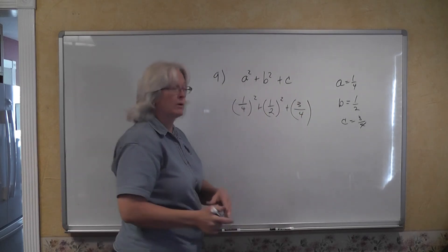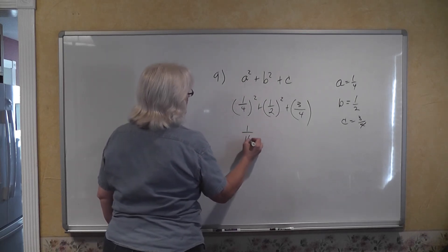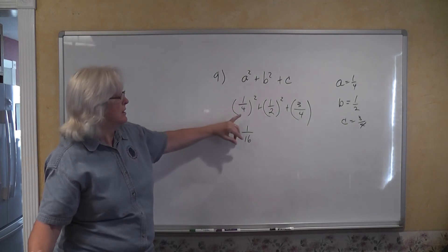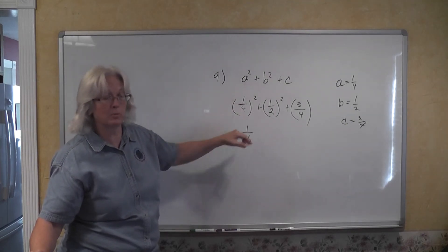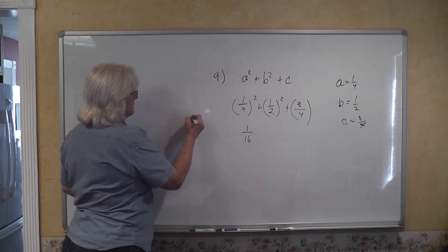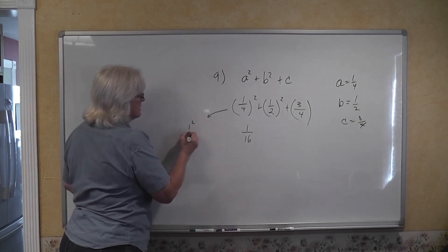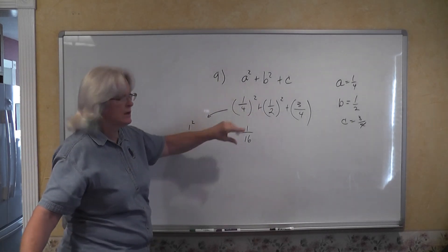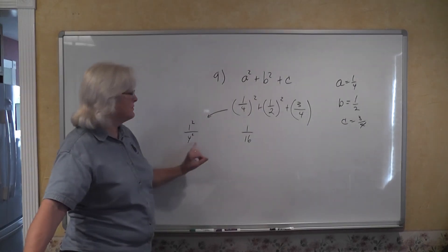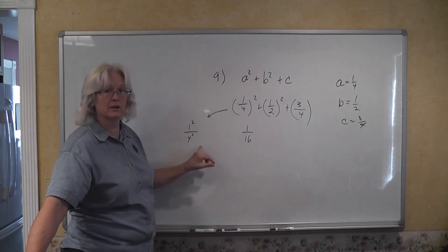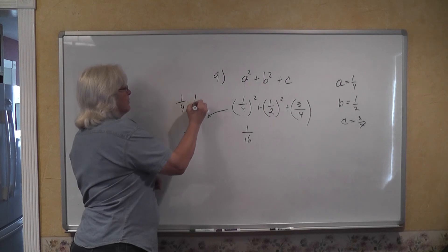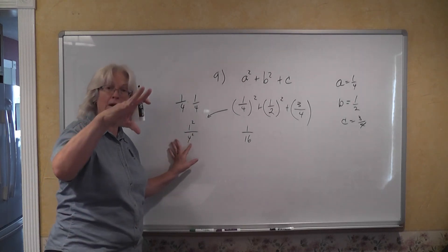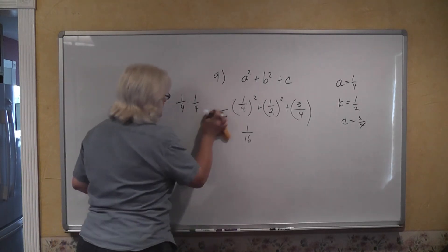1 fourth times 1 fourth is 1 sixteenth. When you're multiplying fractions together or squaring fractions, numerators are multiplied together. Another way to think of this is that you can square the numerator and the denominator separately. When you have the square of this parenthesis, square the numerator gives you 1, square the denominator gives you 16. This is a different approach. You can think of it either this way or using 1 fourth as a factor twice. There will be times when it will be to your advantage to think about squaring the numerator and squaring the denominator.